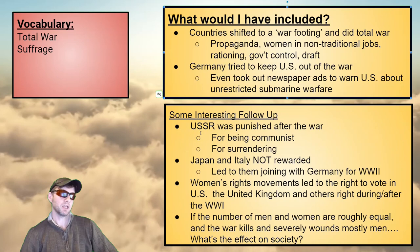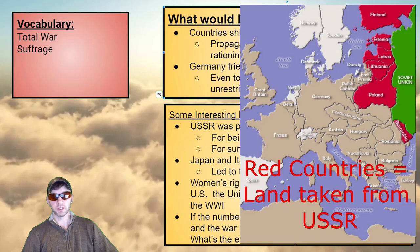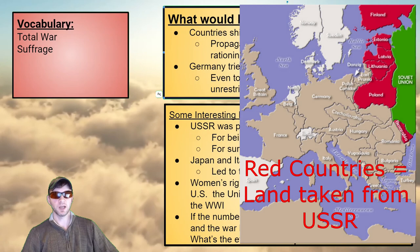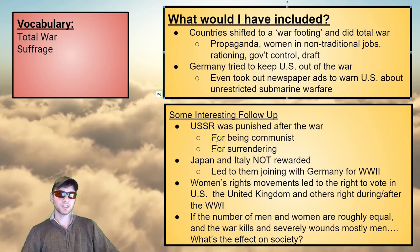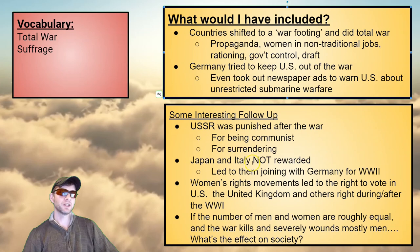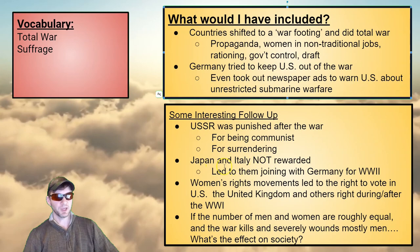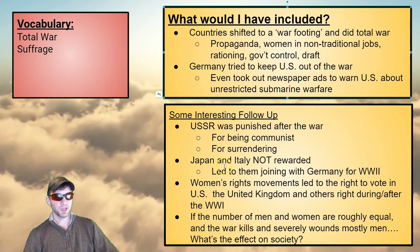Some interesting follow-ups: after the war, the USSR was punished — for being communist, since no other country liked communists, and for surrendering early even though they had been on the winning side. Japan and Italy were also on the winning side but were not rewarded with much land — which very well may explain why Japan and Italy joined with Germany in World War II to try to get more land. Women's rights movements led to the right to vote in the United States, United Kingdom, and others right during and right after the war — the responsibility women took on at home during the war had a big deal to do with the suffrage movement.